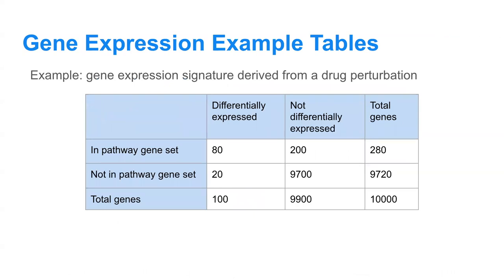In the context of this course, let's say we're looking at a gene expression signature derived from some drug perturbation. Here we're looking at two different traits: whether or not the differentially expressed genes from this drug perturbation signature are differentially expressed or not, and also whether or not those genes are in some pathway gene set or not in some pathway gene set. This will help us find out whether or not this drug is perturbing this specific pathway or the genes involved in it.